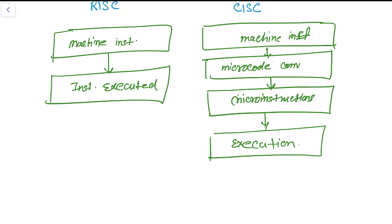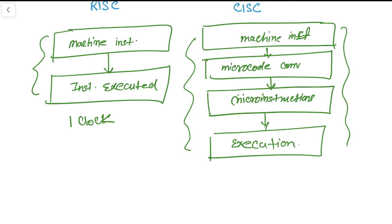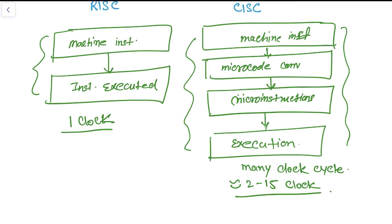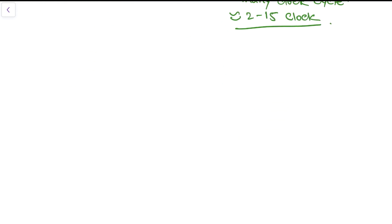After the microcode conversion it will be converted into micro-instructions, and after these micro-instructions the instructions will finally be executed. As this block diagram shows, the RISC instruction is executed directly after the machine instruction, but the CISC instruction is decoded into multiple micro-instructions and then finally executed. So RISC takes one clock cycle and CISC takes many clock cycles — on average around 2 to 15 clock cycles to execute a single instruction.